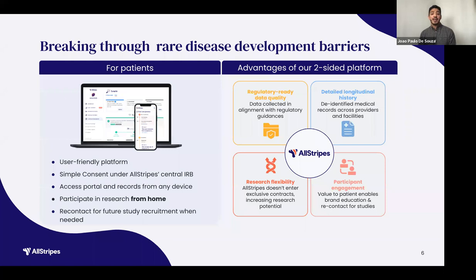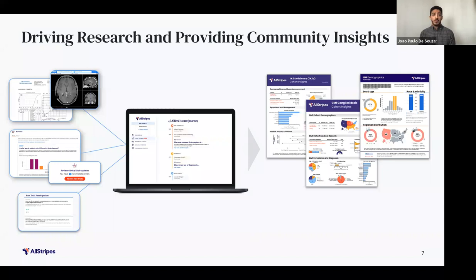One thing that All Stripes prides itself on is increasing research potential. We don't enter into any exclusive research partnerships, whether with academics or pharmaceutical companies. Participants through our platform are able to participate in current and future research studies and also have the ability to advocate and educate the world on their disease. We're proud that our mission is to drive research and provide community insights. We know that patients and caregivers after participating in research are often siloed and not really updated on what is being done with their data. So one thing All Stripes prides itself on is not only providing the data back to the patient, but creating insights to create educational opportunities for the community. With that, I'll pass it over to Ashley and she'll go over our insights.